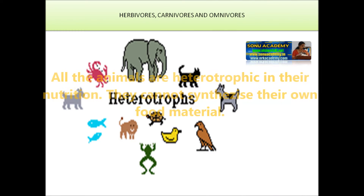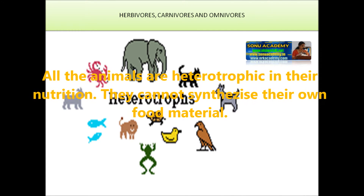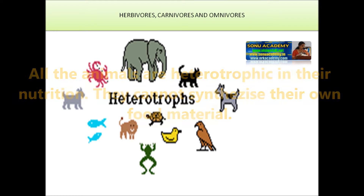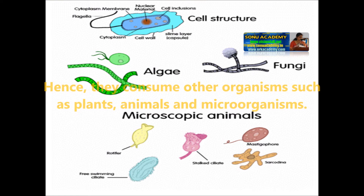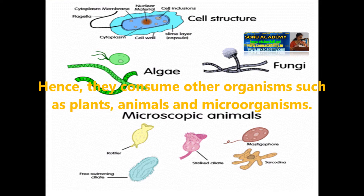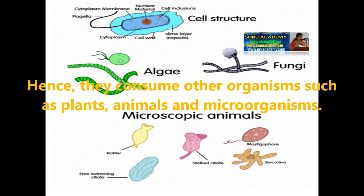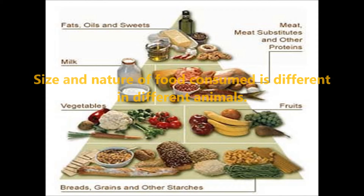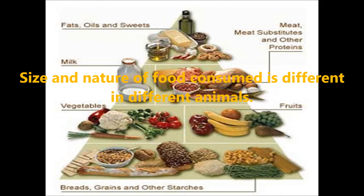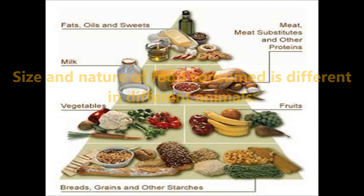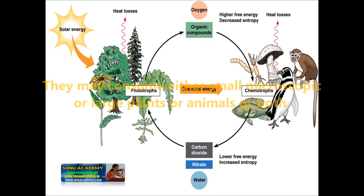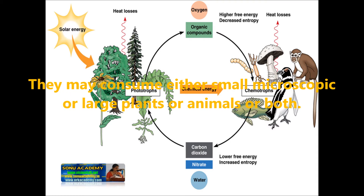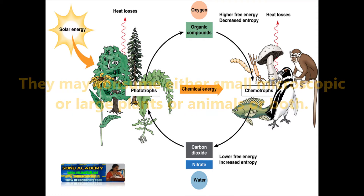All animals are heterotrophic in nutrition — they cannot synthesize their own food material. Hence they consume other organisms such as plants, animals, and microorganisms. The size and nature of the food consumed is different in different animals. They may consume either small microscopic or large plants or animals, or both.